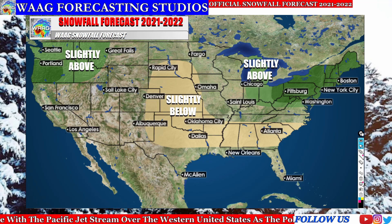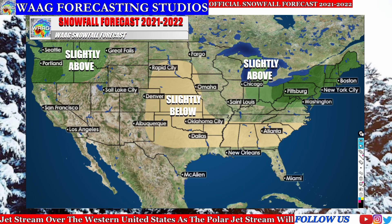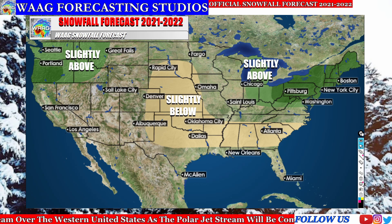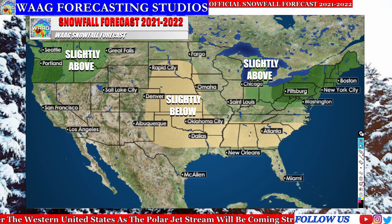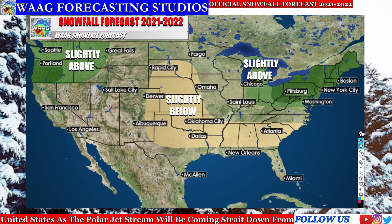On our first slide we're going to take a look at our snowfall anomaly for the snowfall season of 2021-2022. Here you can see that we're going to be starting off with our slightly below average region that stretches from the central Great Plains all the way down into the southeastern United States.